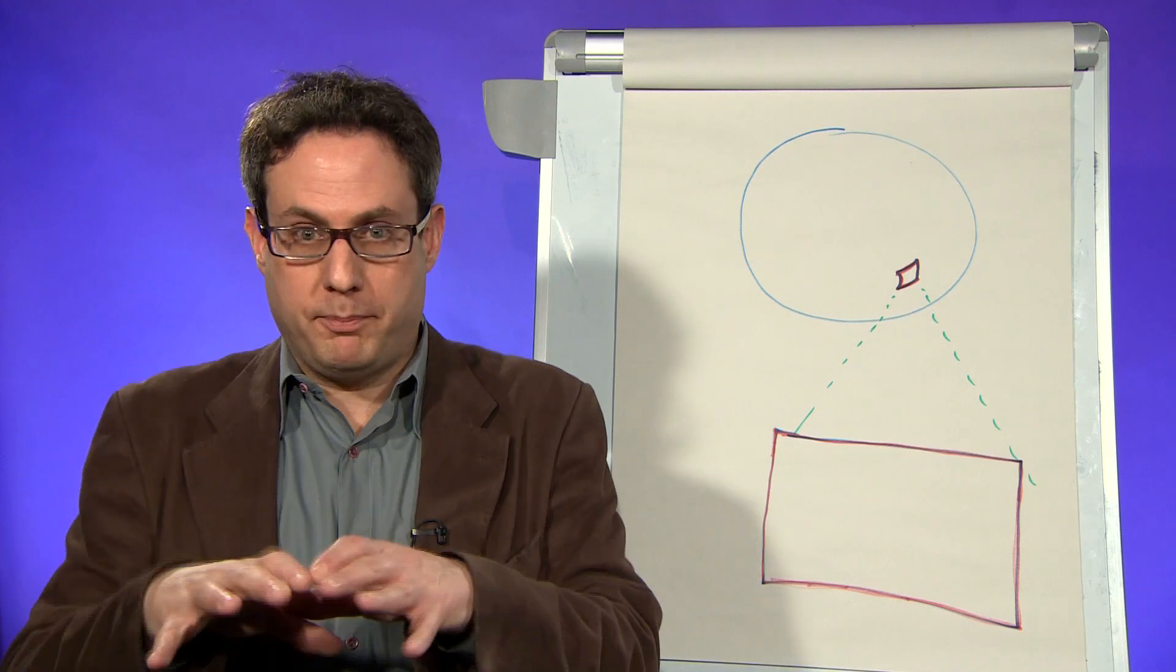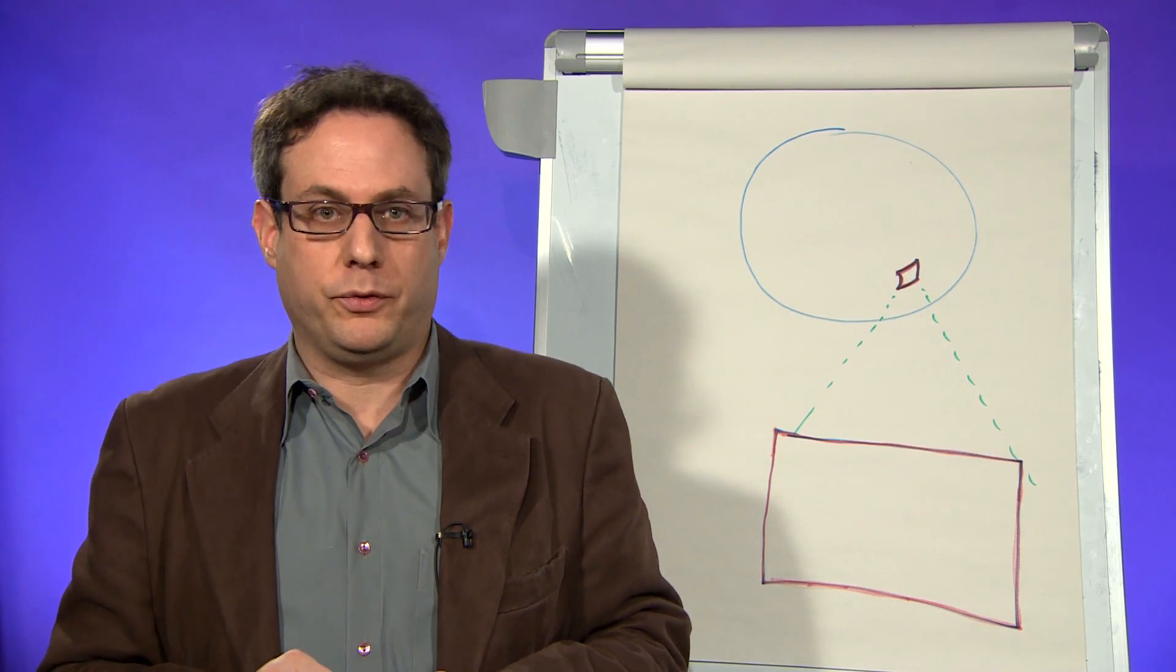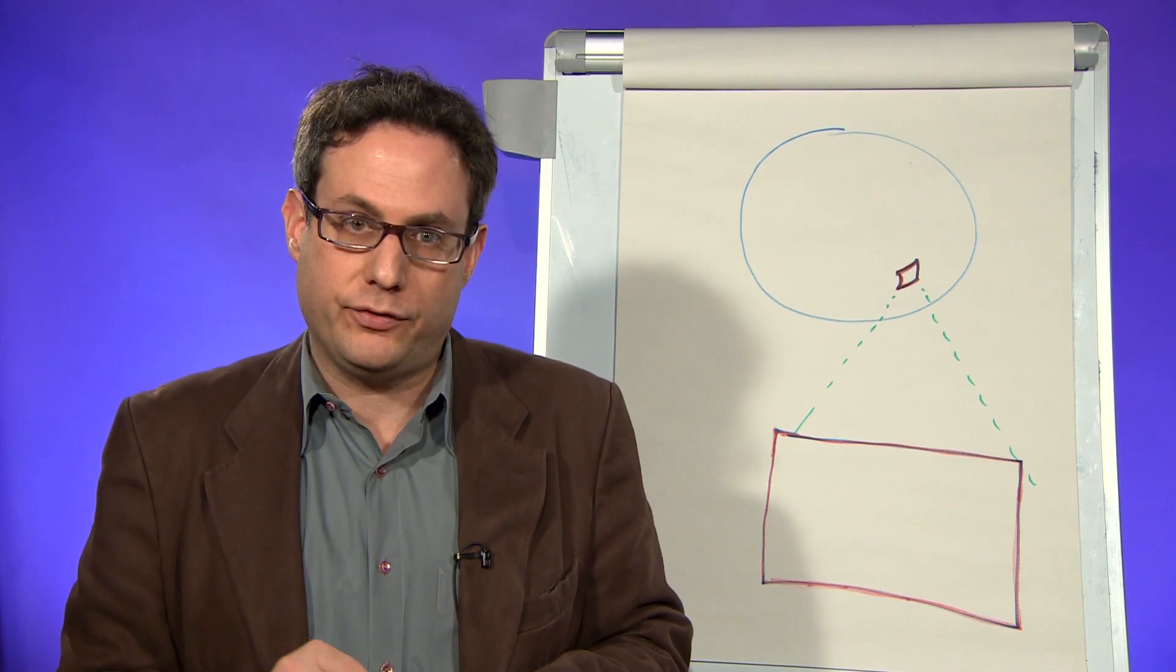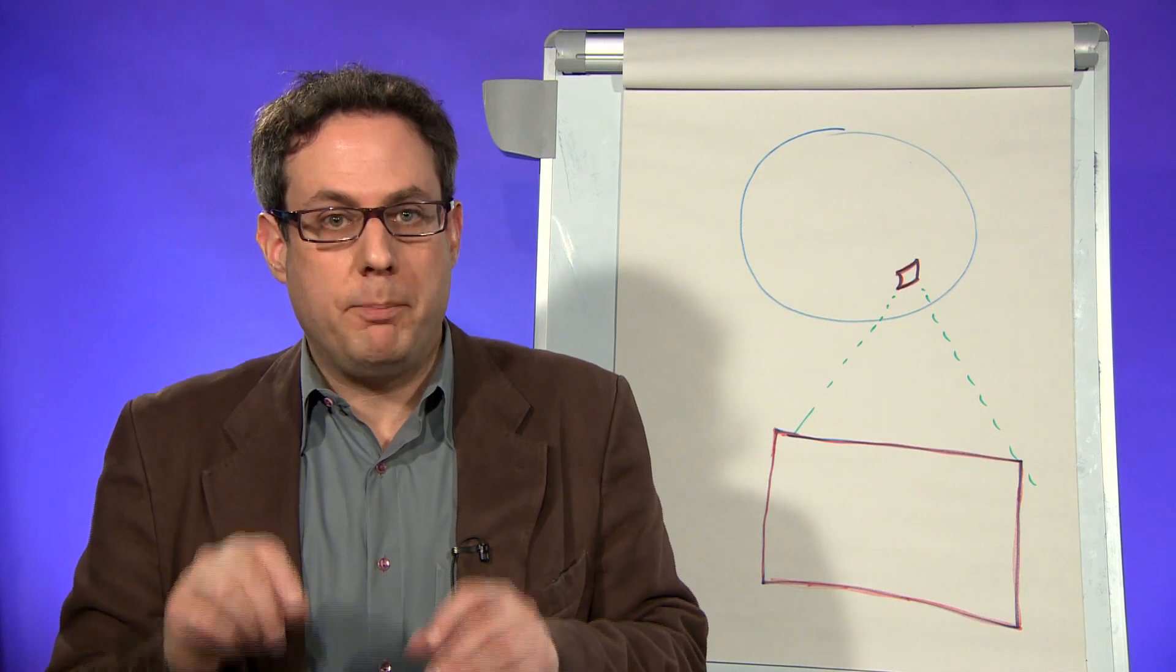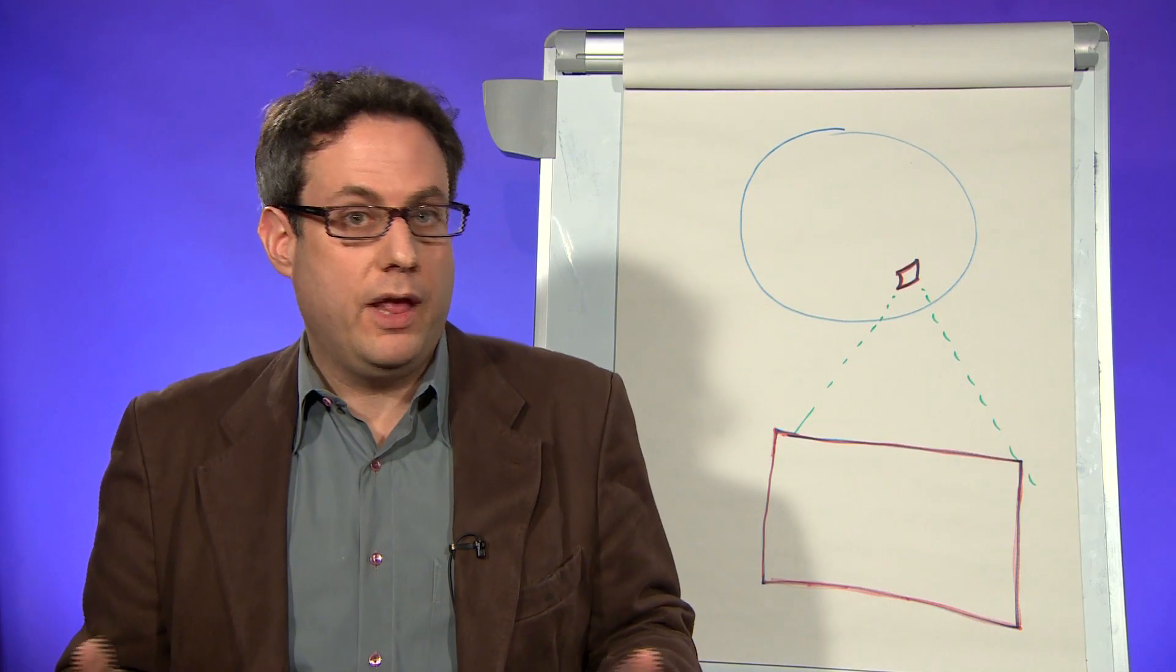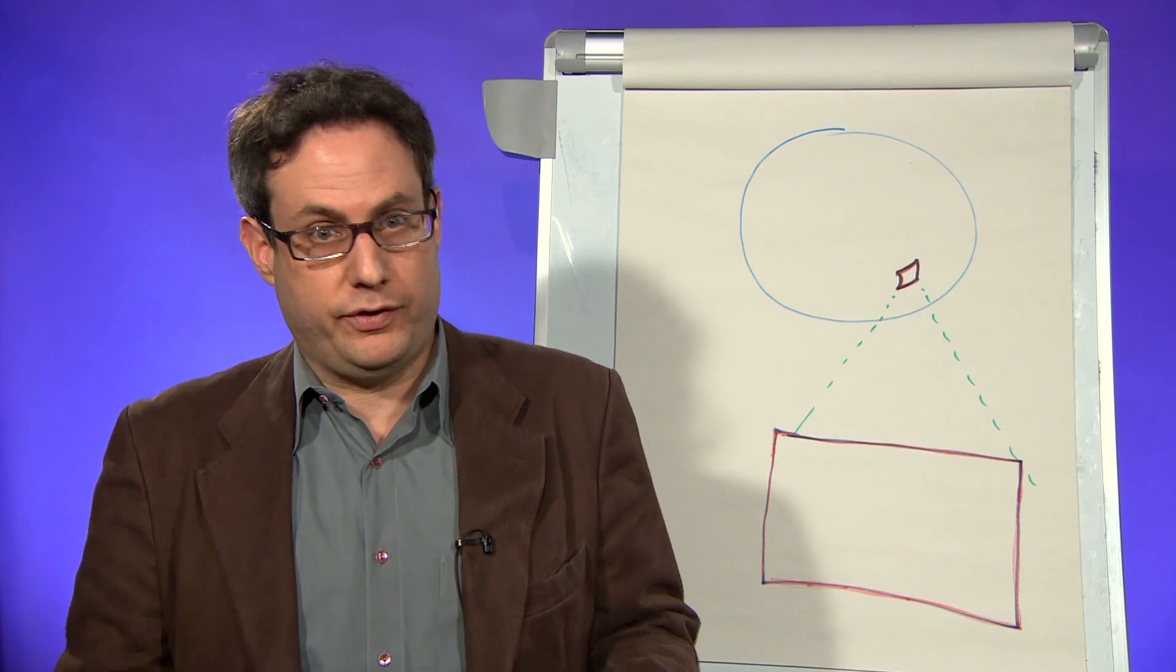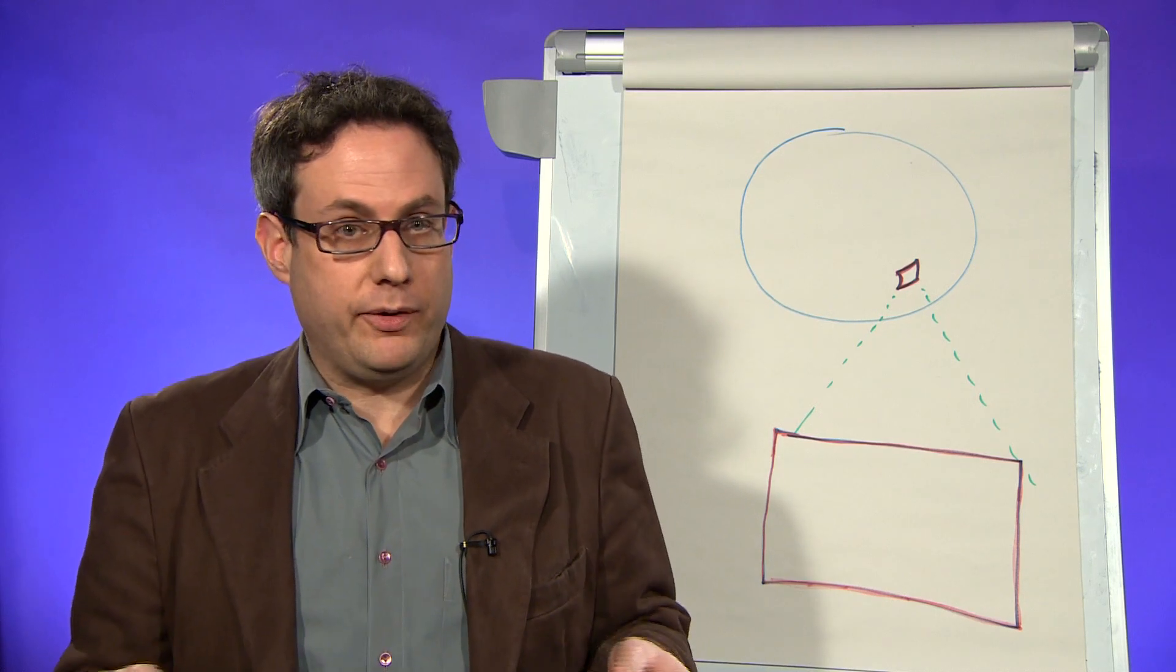At the same time as it blew up things on larger scales, it also took quantum mechanical fluctuations, which we think exist on very tiny scales, and made those big enough that they would become, eventually after many billions of years, the galaxies and clusters of galaxies that we see in the universe today.